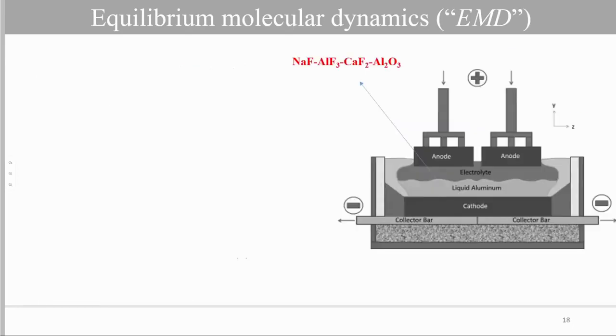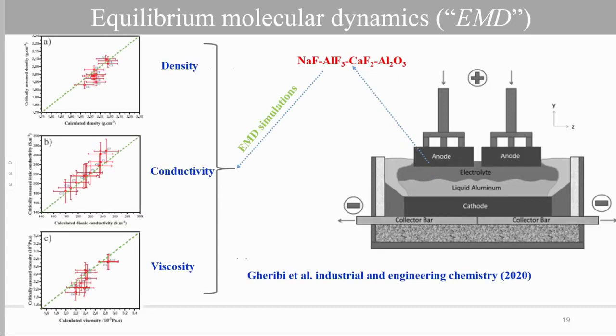To illustrate the power of equilibrium molecular dynamics simulation, I'm going to present an example on the aluminum electrolysis cell. In the aluminum electrolysis cell, the so-called bath, formed by NaF, AlF3, CaF2, Al2O3, and maybe some other additives, is used to dissolve the alumina and to electrolyze alumina into aluminum. In this system, we have performed a series of EMD simulations to calculate key properties: density, electrical conductivity, and viscosity. And we found good predictive capability of molecular dynamics simulation in predicting these key properties.